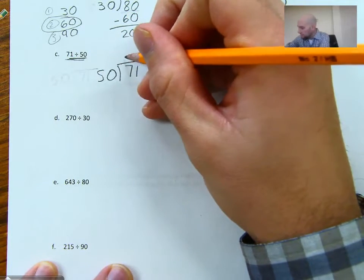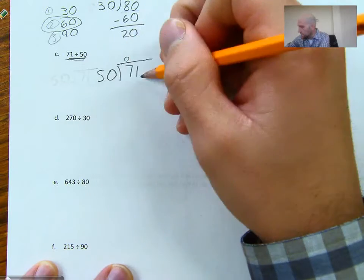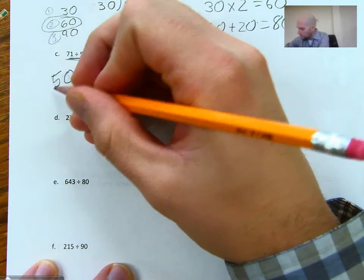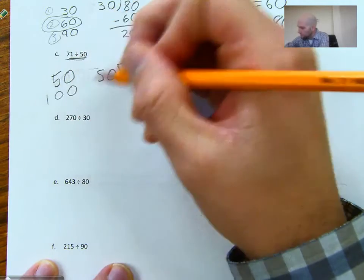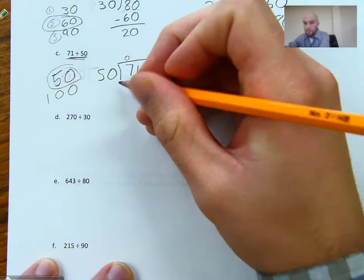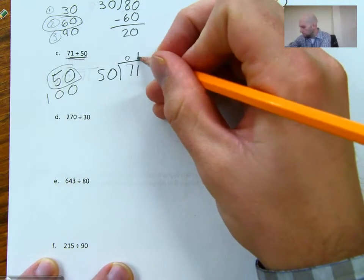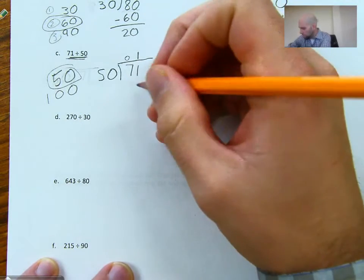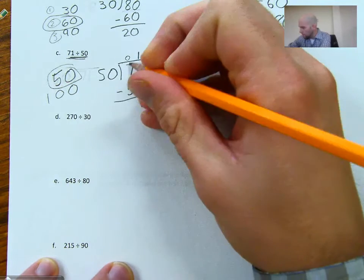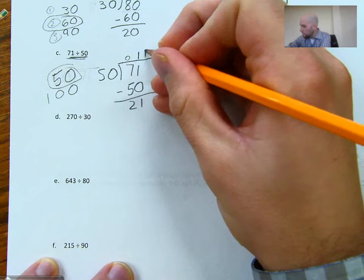50 goes into 7 zero times. 50 goes into 71. Well, I can do 50. 50 times 2 is 100. Okay, I've already gone too far. So 50 only goes in one time. So I get one. And then I subtract 50. And I'm going to get 21 as my remainder.